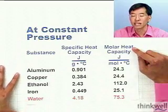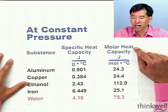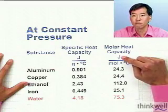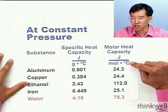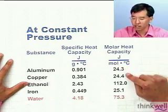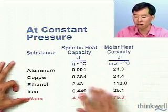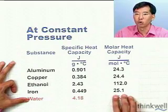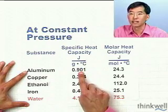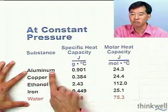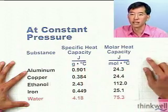We can also define another intensive property called the molar heat capacity. The molar heat capacity is the number of joules of energy you have to put in to raise one mole of the compound by one degree Celsius. Values are shown again for aluminum, copper, ethanol, iron, and water. These two quantities are related by the molar mass — if you multiply the specific heat capacity by the molar mass of the substance, you get the molar heat capacity, which makes sense based on the units.